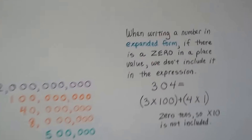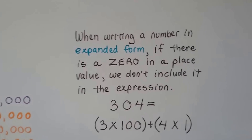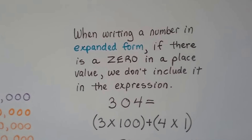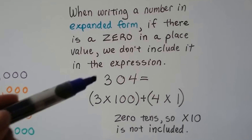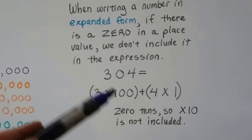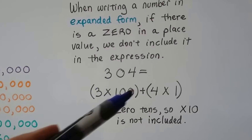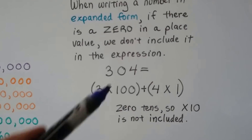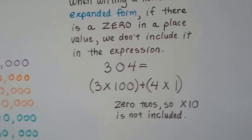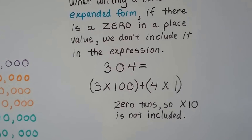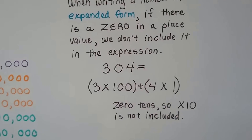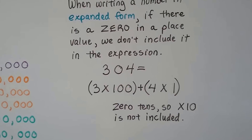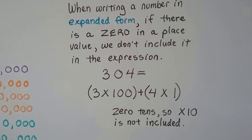When writing a number in expanded form, if there's a zero in a place value, we don't include it in the expression. So we have 304 — that would be 3 times 100 plus 4 times 1. Because there's a zero in the tens place, there are no tens, so that times-10 term in expanded form is not included. We just skip right over it.